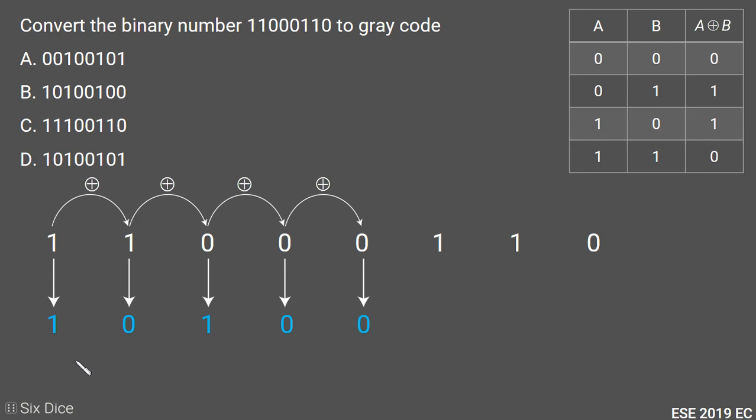Then we will perform XOR of fifth and sixth bit. So it is 0 and 1, both of them are different, so it will result in 1. Now we will perform again XOR of sixth and seventh bit.